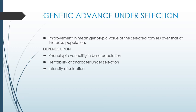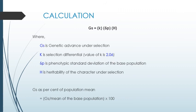Genetic advance depends on: phenotypic variability in a base population (since selection requires variability), heritability of the selected character, and the intensity of selection. The formula for genetic advance under selection is: GS = k × σp × h², where k is the selection differential (value is 2.06), σp is the phenotypic standard deviation of the base population, and h² is the heritability of the character. Genetic advance as percent of population mean = (GS / mean of base population) × 100.